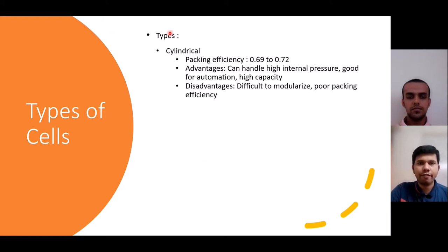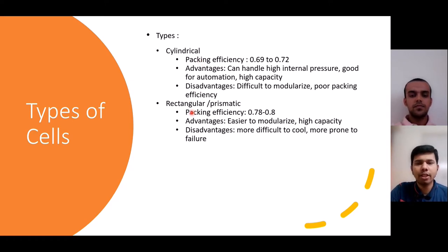These cells can be of different types. First is a cylindrical cell which has low packing efficiency but can handle high internal pressure, though they are difficult to modularize. Then comes the rectangular or prismatic type of cells which have medium packing efficiency but are easier to modularize.